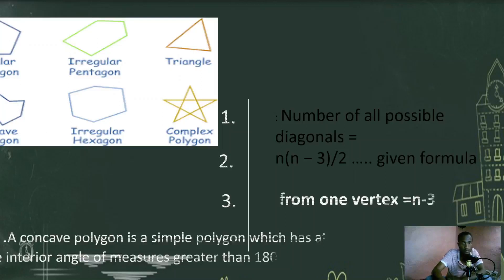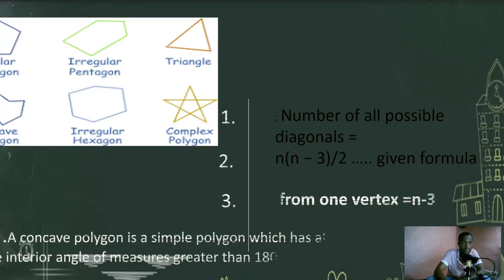A concave polygon is a simple closed polygon which has at least one interior angle that measures greater than 180 degrees — at least one angle must measure more than 180 degrees. As you see here, that is concave. And we have the second one, which is convex polygon.